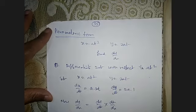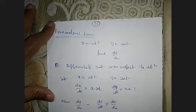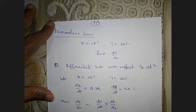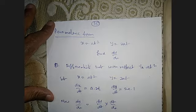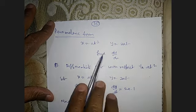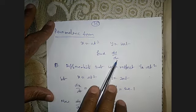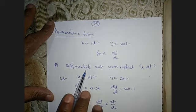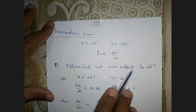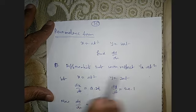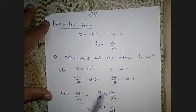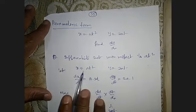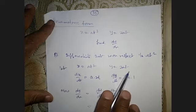In parametric form, we may be asked to find dy/dx or dx/dy. For example, the question says find dy/dx, which means differentiate y with respect to x — that is, differentiate 2at with respect to at². So let x = at² and y = 2at.